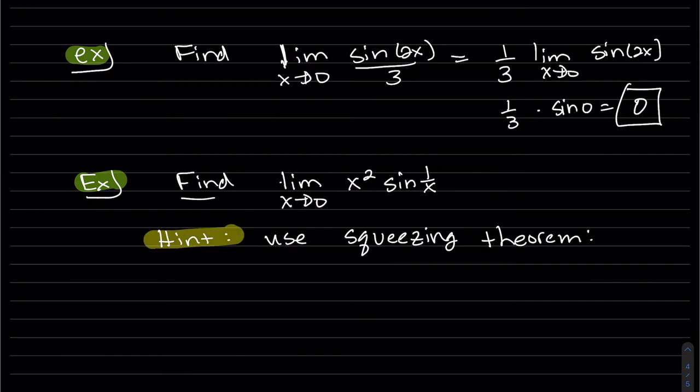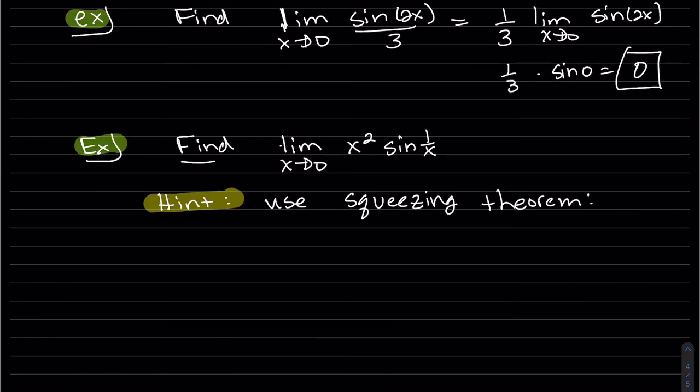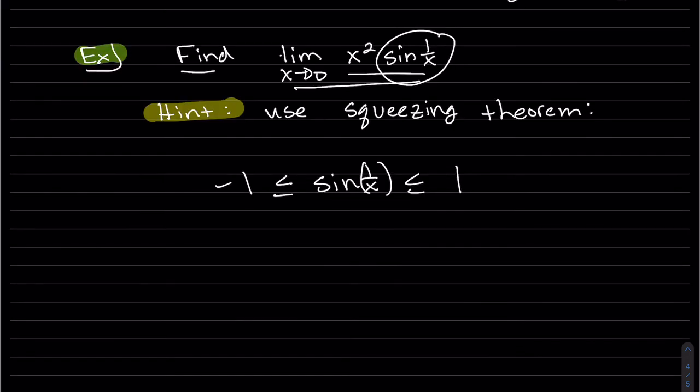We want to use a squeezing theorem for this one. So what we're going to do, if we're going to use a squeezing theorem, we want to find, we want to squeeze this in the middle. We're going to start off with the inequality that we know is true. So we do know sin(1/x), whatever angle that is, sine of anything is always squeezed in between -1 and 1.